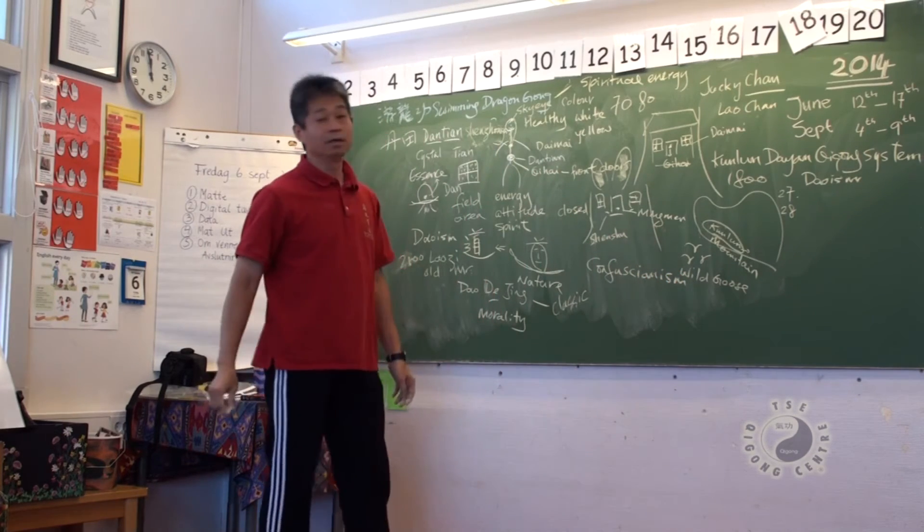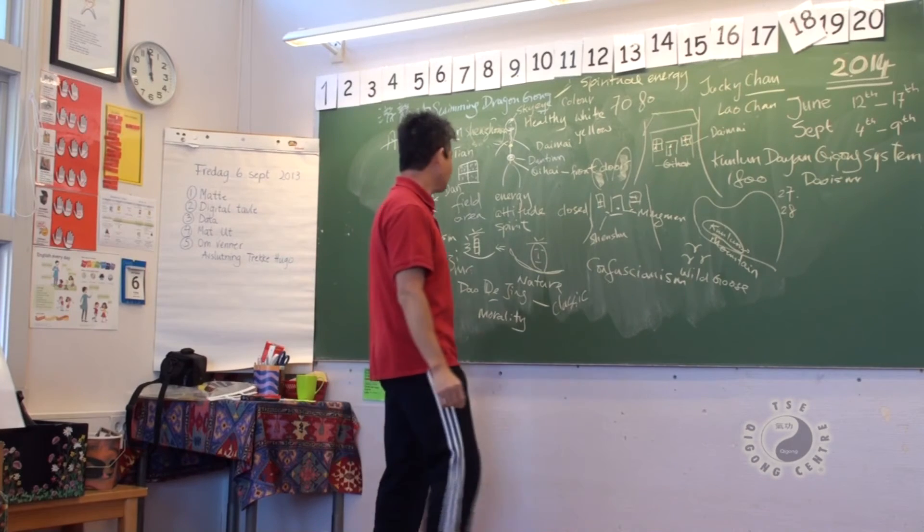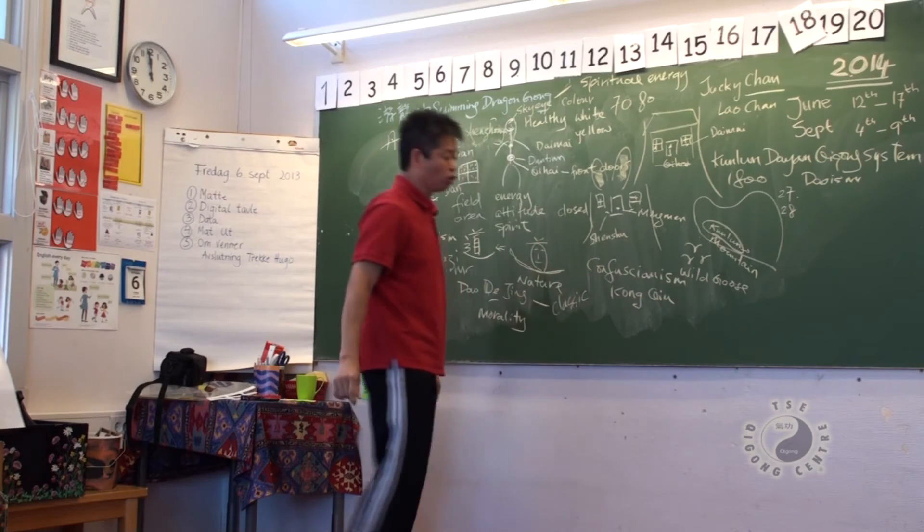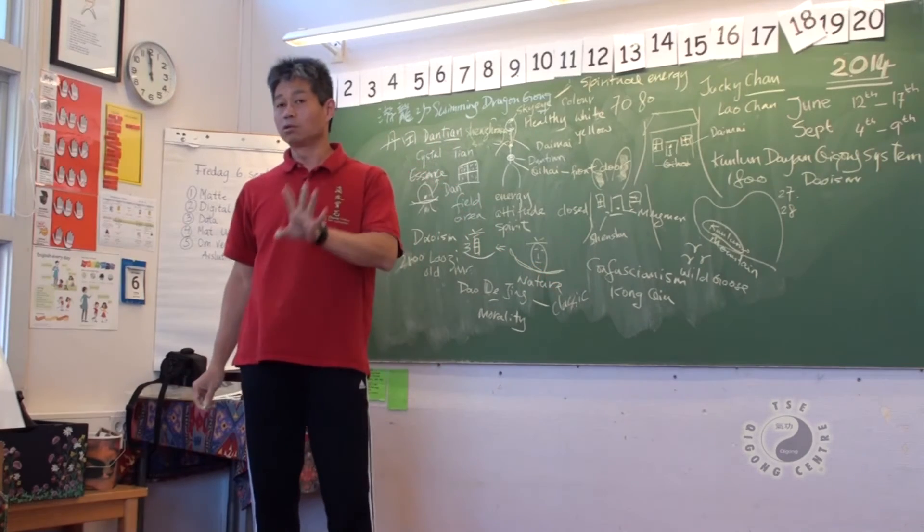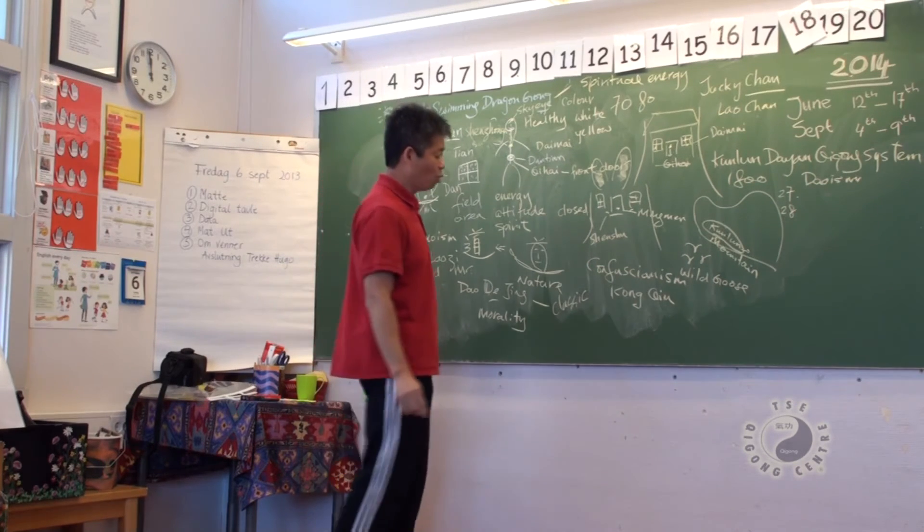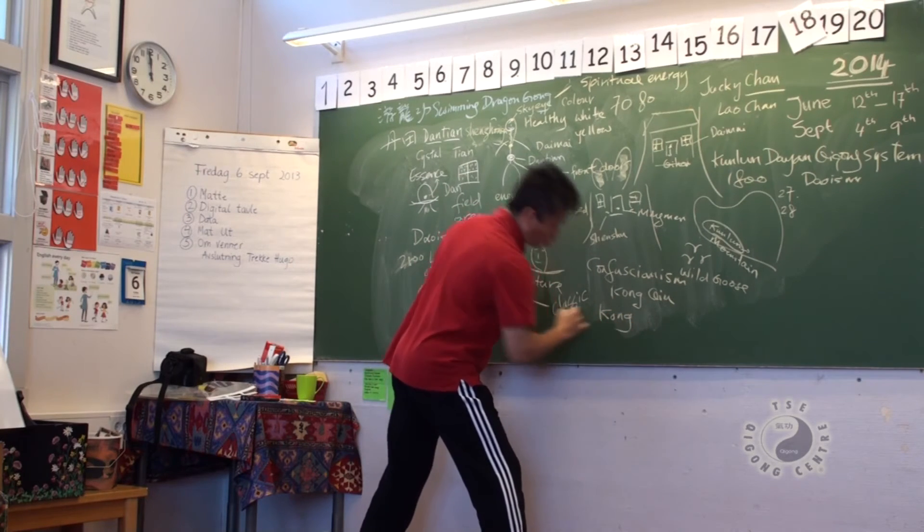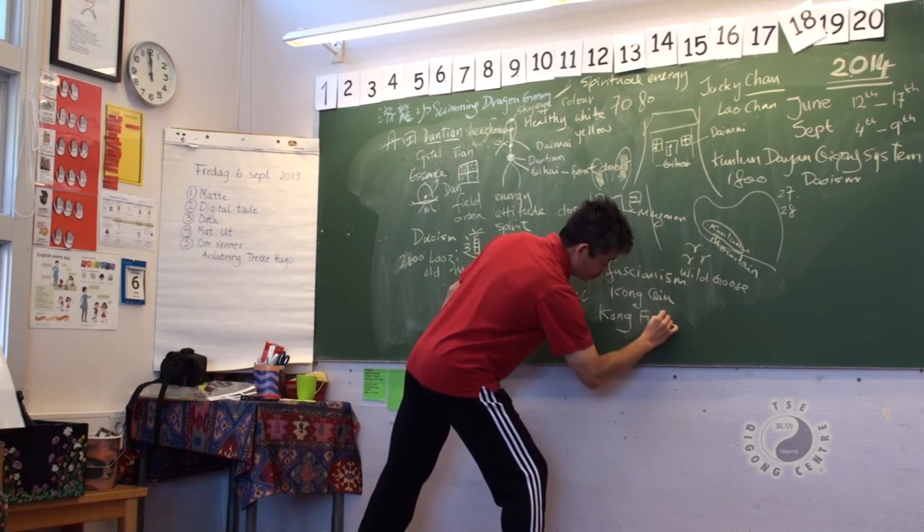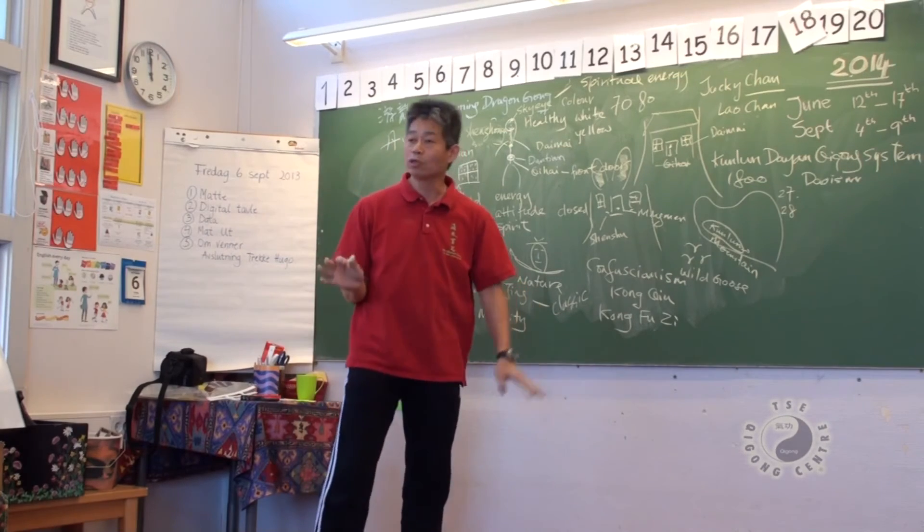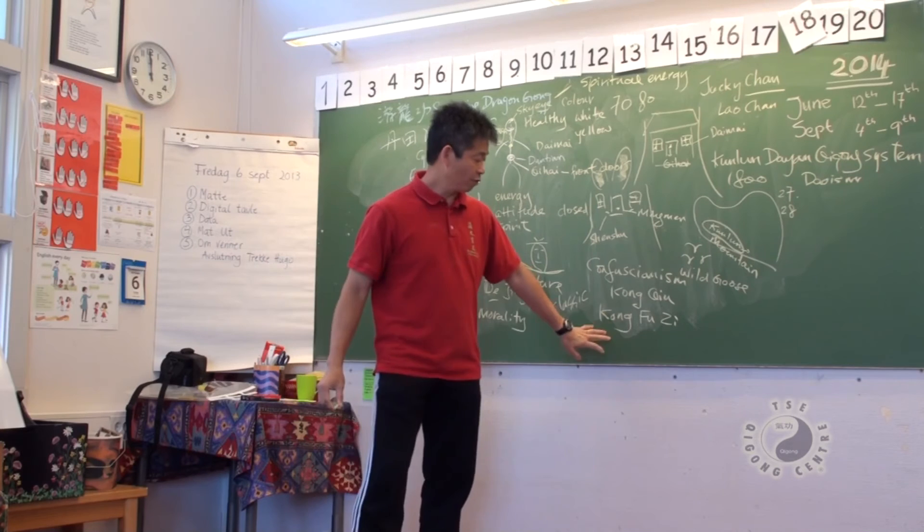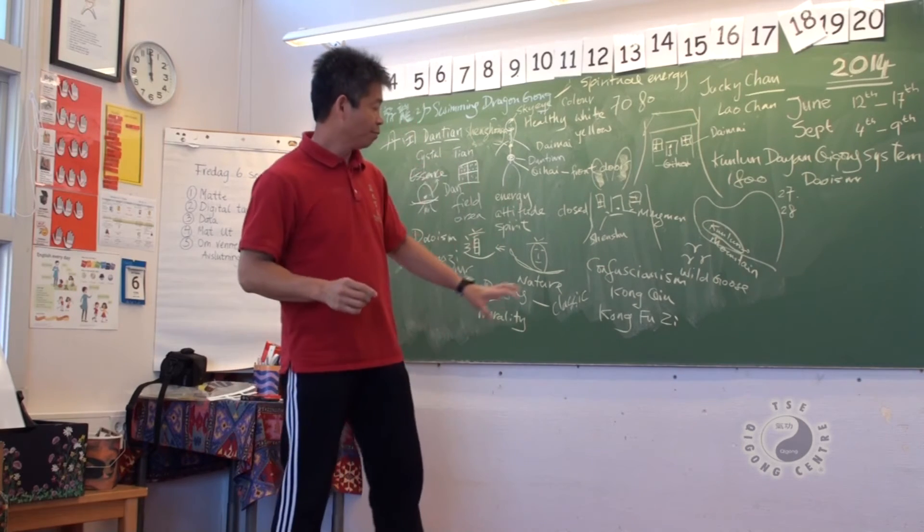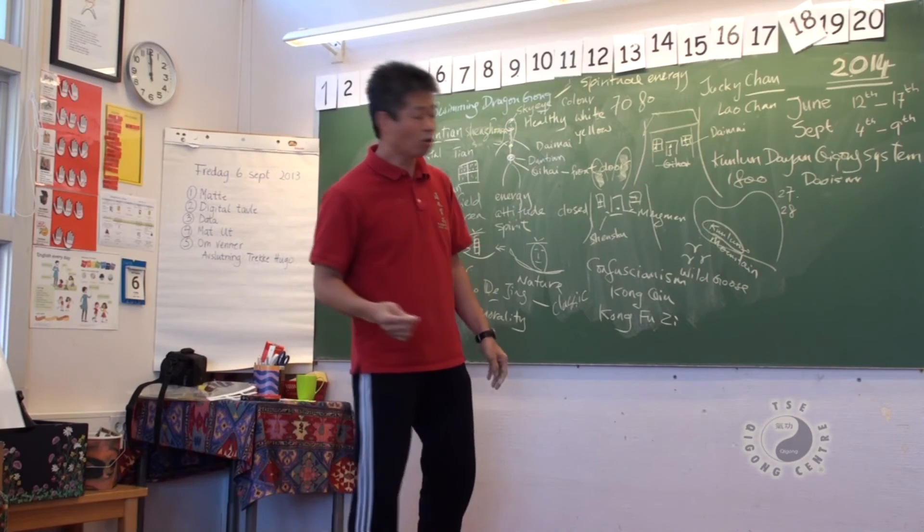Confucianism. You heard about, also come from a master. Kong Fu Zi. Fu Zi, Laozi is the same. Mr. Kong with the knowledge. Anybody call Zi means to have knowledge. Kong Fu Zi, Confucius, maybe come from that. But Confucius in Chinese called Ru Zi.